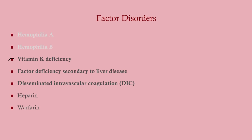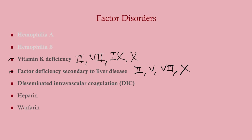We're going to talk about vitamin K deficiency, factor deficiency secondary to liver disease — remember factors 2, 5, 7, and 10 are made in the liver, and the vitamin K-dependent factors are 2, 7, 9, and 10, which should be burned into your brain from Step 1. We'll also cover DIC, an important concept that comes up frequently, and a couple of drugs.